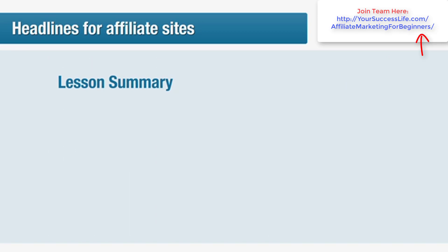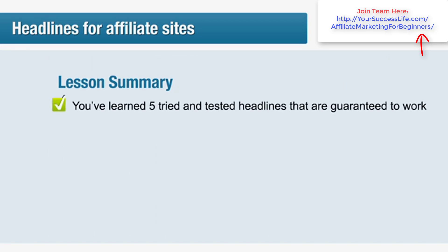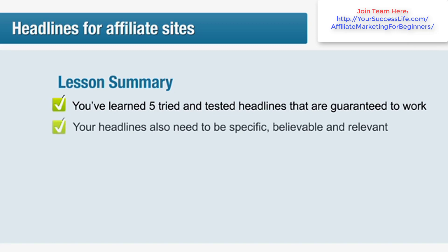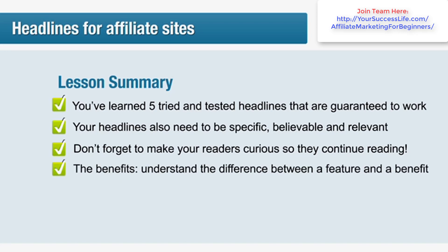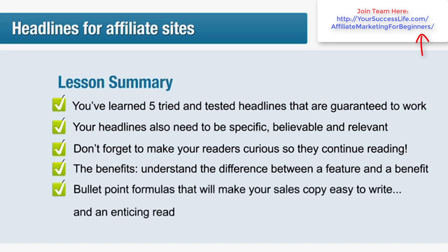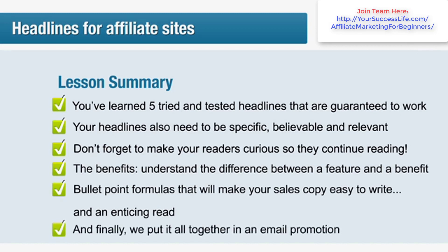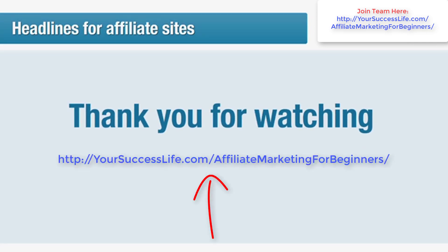Lesson summary: you've learned five tried and tested headlines that are guaranteed to work. Remember, it's not just about hype — your headlines also need to be specific, believable, and relevant. Don't forget to make your readers curious so they continue reading. Understand the difference between a feature and a benefit, and make sure your copy contains plenty of benefits. We've given you some great bullet point formulas that will help make your sales copy easy to write and an enticing read. And finally, we've put it all together in an email promotion. Thanks for taking the time to watch and learn — I look forward to seeing you again soon.